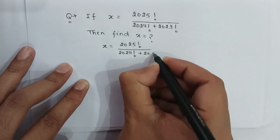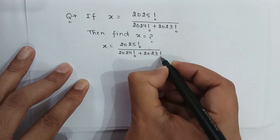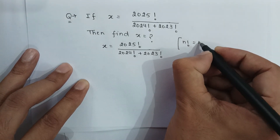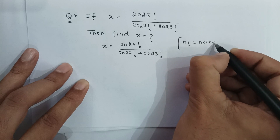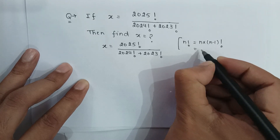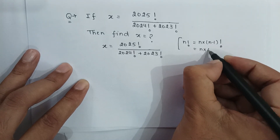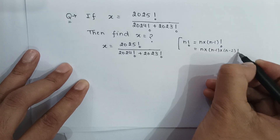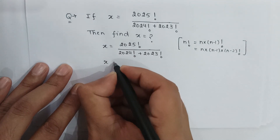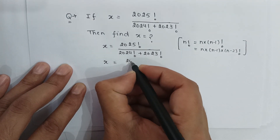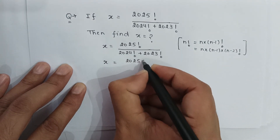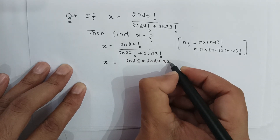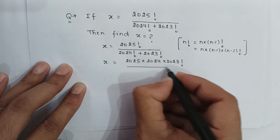As we know, if n factorial is written, it can be written as n multiplied by n minus 1 factorial, or as n multiplied by n minus 1 multiplied by n minus 2 factorial. So here x is equal to 2025 multiplied by 2024 multiplied by 2023 factorial in the numerator.